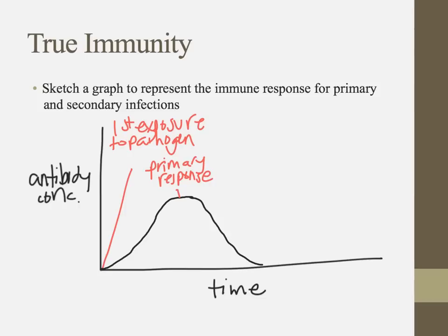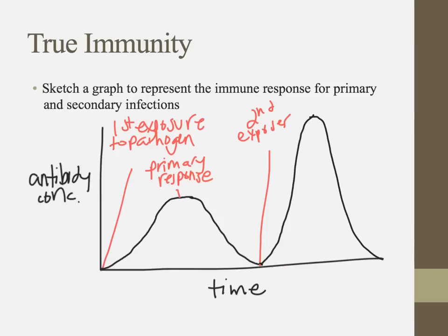In a second exposure at another point in time, we get not only a greater response in terms of antibody production, but we also take less time to produce them, and we fight off that infection really quickly. This is what we call the secondary response.